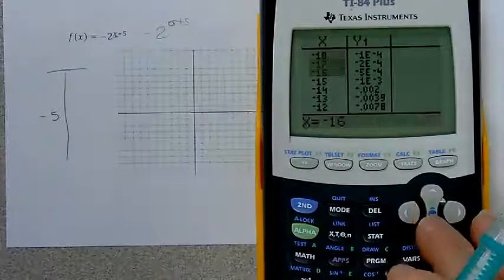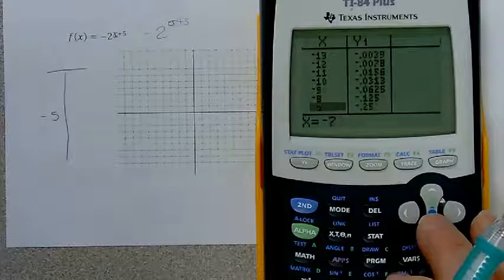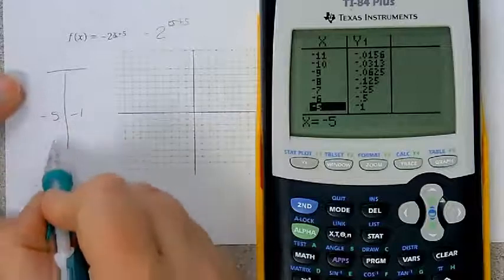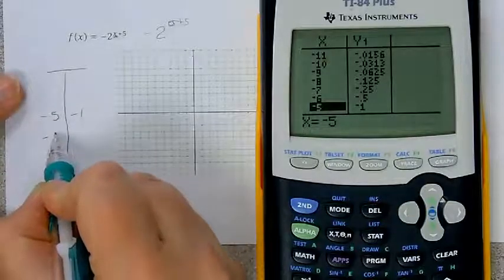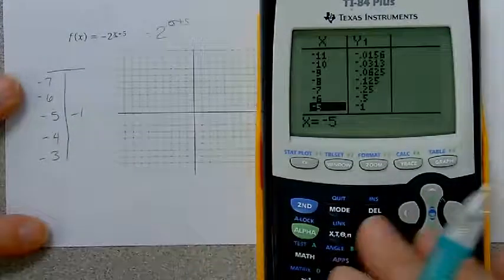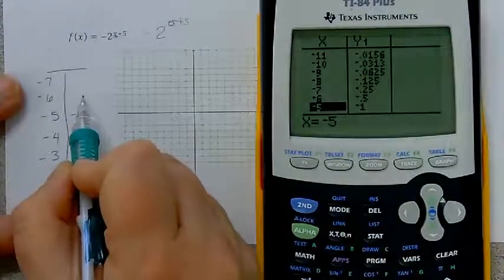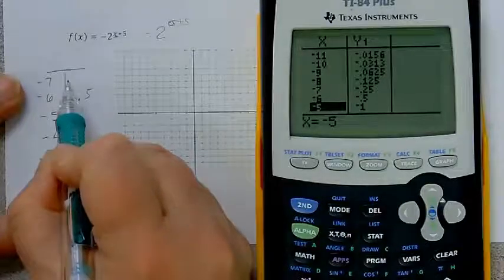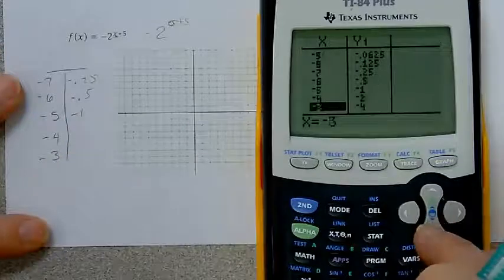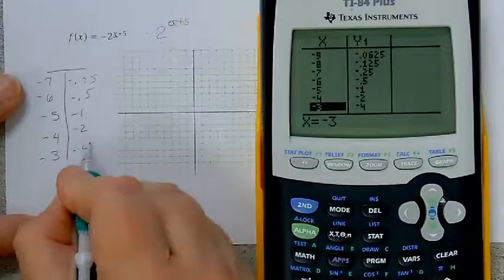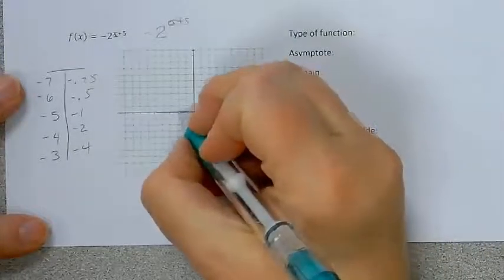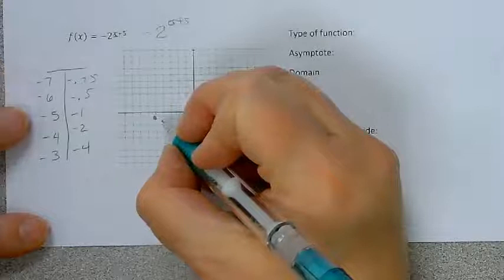So when I look at my graph, I really want to look at x equals negative 5, which gives negative 1. Then I want to pick two numbers bigger and two numbers smaller for graphing. Negative 6 gives negative 0.5, and negative 7 gives negative 0.25. Negative 4 gives negative 2, and negative 3 gives negative 4. When I graph these numbers, they will actually be on the graph.